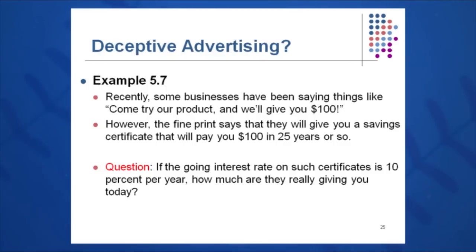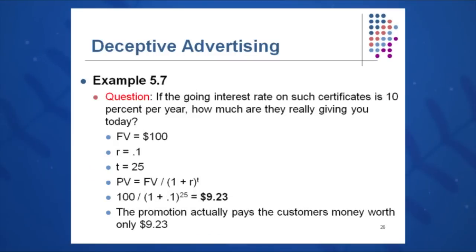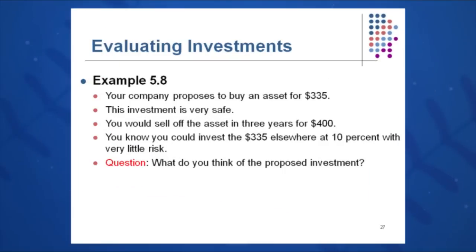You see some deceptive advertising, and you can use these equations to help sort through it. For example: 'Come try our product — we'll give you $100.' But in the fine print, you'll get a savings certificate that pays you $100 in 25 years. You're not getting the $100 today, and that's the key. If the interest rate is 10%, the present value of this $100 certificate is 100 divided by 1.1 to the 25th, which equals just $9.23. So you're really getting $9.23 today in present value terms.